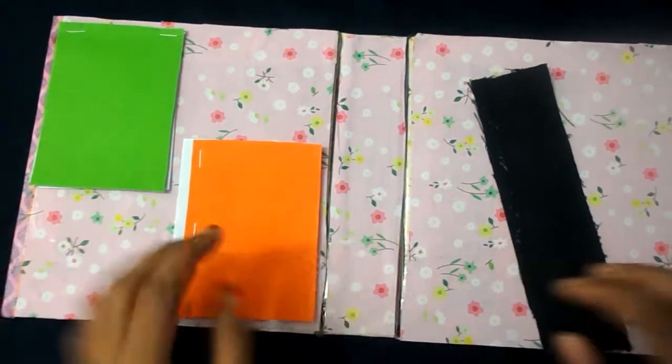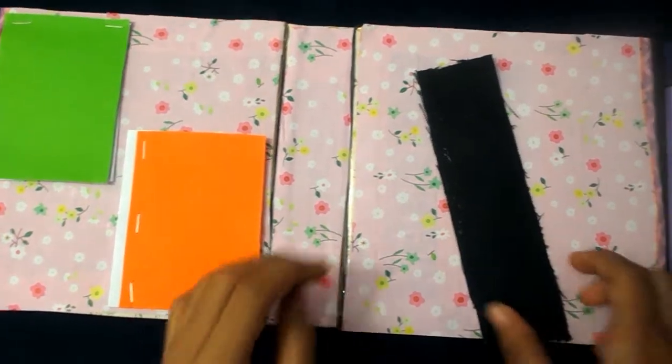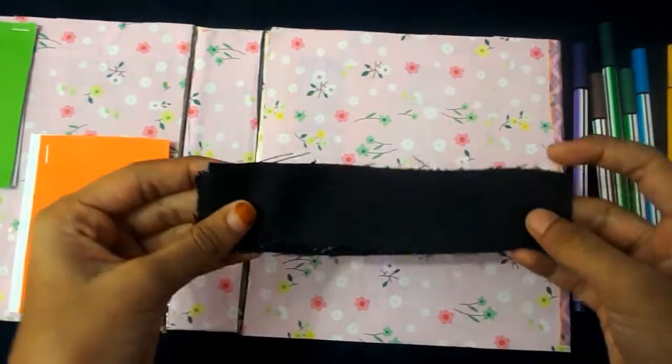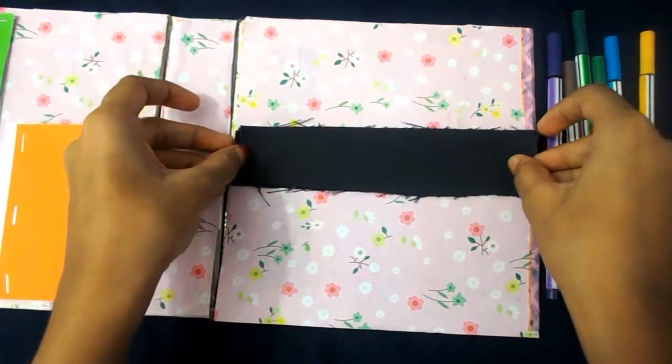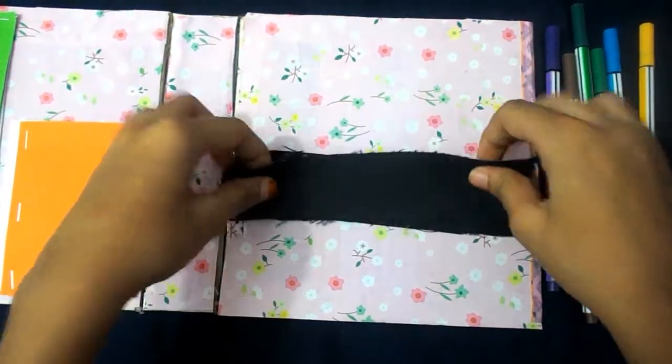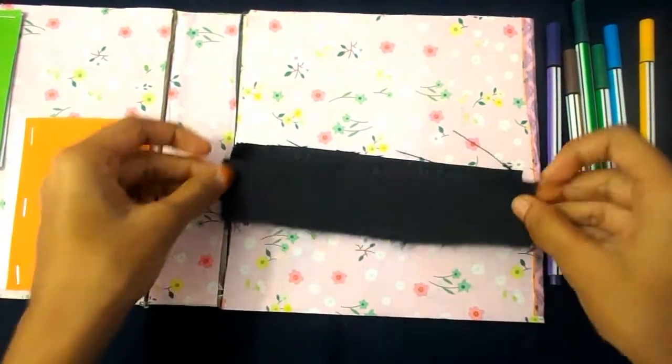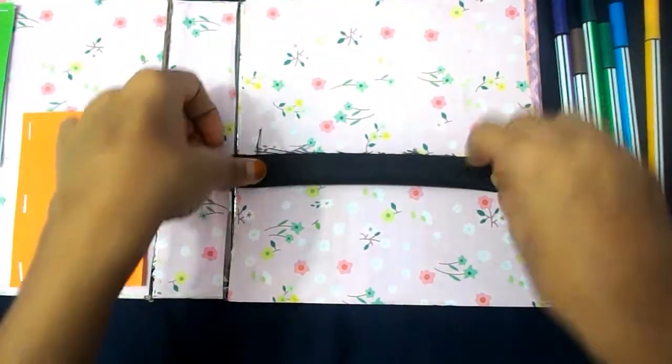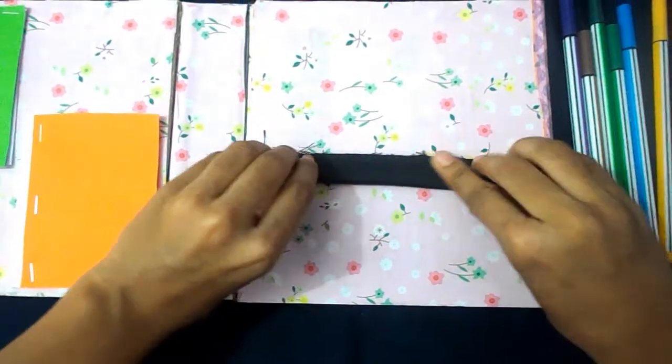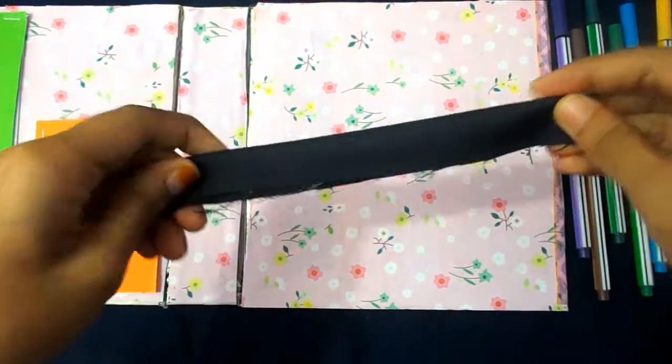I have stuck the books. Now we need something to hold the colour pens. For that we will need jeans of two pieces. It should be the same size of the cardboard. Now we need to stick these both pieces together. Then fold it in half and stick. Like this. It should look like this.